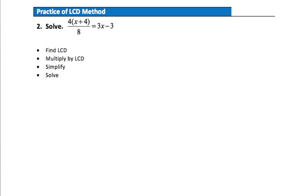Okay. So step one, we're going to find the LCD. In this case, it's really easy. We only have one denominator. That denominator is 8. So my lowest common denominator is simply going to be 8.